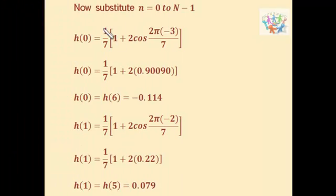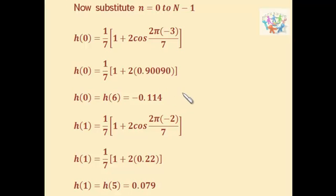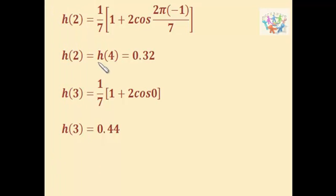Now we substitute values for n equal to 0 to N−1, i.e., 0 to 6. Substituting n equal to 0, h(0) equals −0.114. Since alpha equal to 3 is the symmetric point, h(0) equals h(6), so both have the value −0.114. Substituting n equal to 1 gives h(1) equal to 0.079, and h(1) equals h(5). Substituting n equal to 3 gives h(3) equal to 0.44. The values h(0) through h(6) are the filter coefficients.